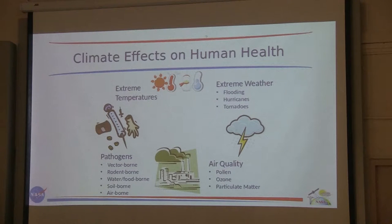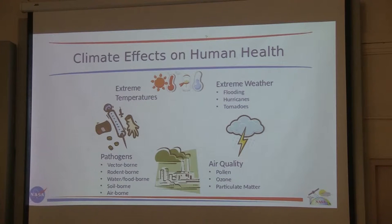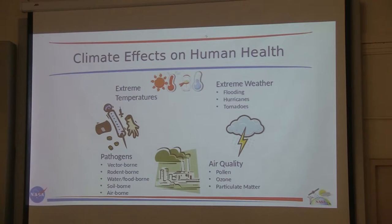Air quality is studied quite a bit at NASA. This includes pollen in the air, which can exacerbate asthma and allergies and cause respiratory conditions. Ozone is good in the stratosphere protecting us from UV radiation, but at ground level it's not good for our lungs. Particulate matter can also exacerbate respiratory conditions. Today I'm going to focus mostly on pathogens — vector-borne, rodent-borne, water-borne, soil-borne, and airborne — and go through a couple of examples of each.